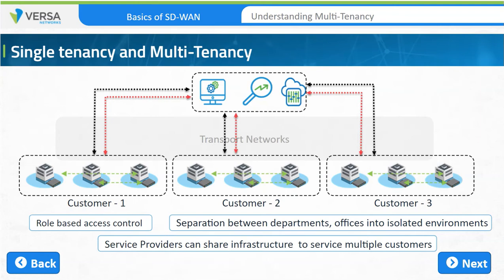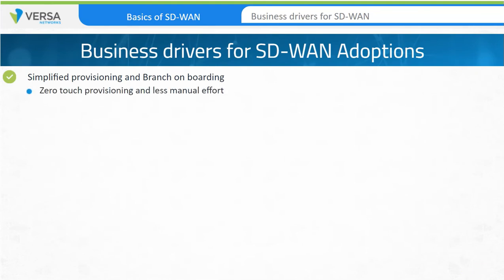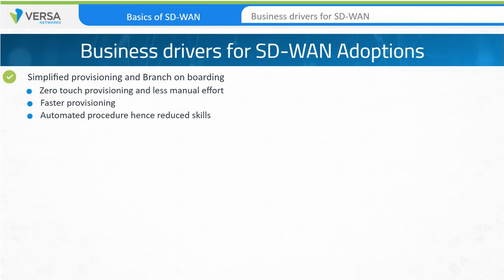The first business driver is simplified provisioning and branch onboarding. With minimal manual efforts, or with zero-touch provisioning, a branch can be staged and start operating as an SD-WAN branch very quickly. The onboarding procedure is automated to reduce the time taken to onboard a new location and make it less dependent on the remote site engineer's competency. With current onboarding methods, bringing a new site online may just involve plugging a laptop into the branch device, opening a web browser, and clicking on a link in an email. What used to take on-site engineers and many weeks to plan can be done in just a few minutes by local employees.